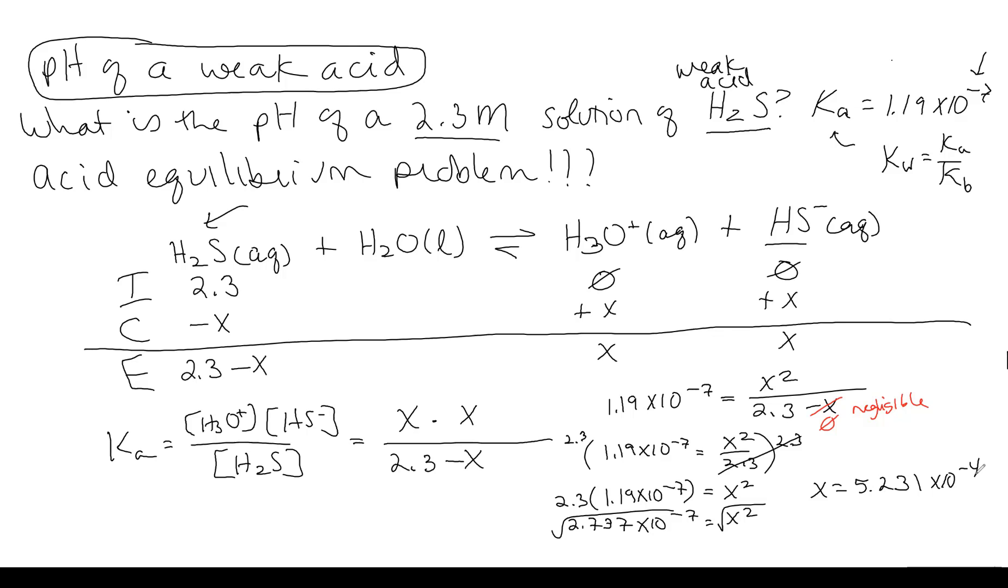And now we have a number. So now we have to think about what that number means. So if we go up to our equation up here, remember, our goal is to calculate the pH. And that's equal to negative log of the hydronium ion concentration. And if we look up here in our equation, that X value is hydronium. So that's good. So that means if we want to calculate pH, which we do, because that's what the question is asking us.